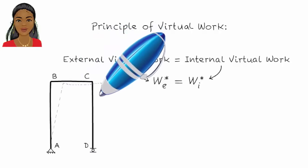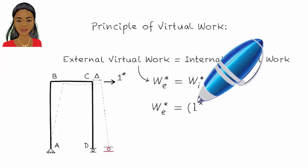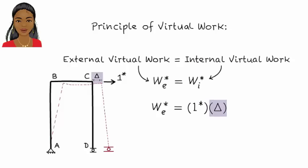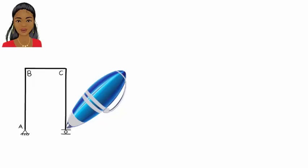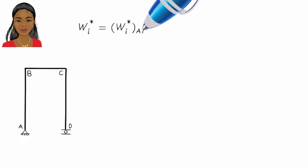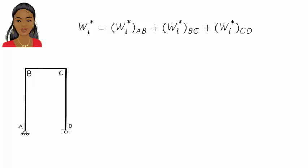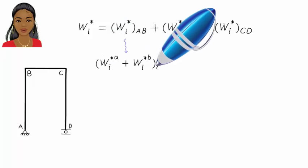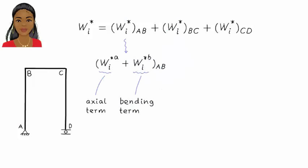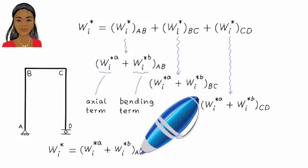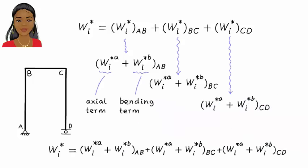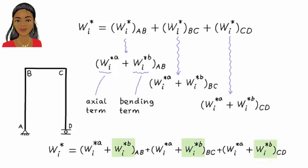The expression for external virtual work is easy to obtain. It equals 1 times delta, where 1 is the magnitude of the virtual load and delta is the horizontal displacement at C. The expression for internal virtual work, however, is a bit more involved. The structure's internal virtual work equals the sum of the internal virtual works for the individual members. Further, the internal virtual work for each member consists of two parts: a part due to axial deformation and a part due to bending. So let's rewrite the equation, where W* A stands for virtual work due to axial deformation and W* B stands for virtual work due to bending.